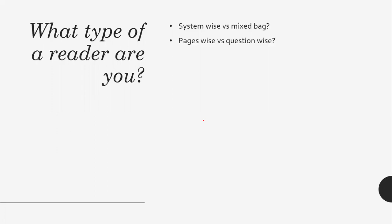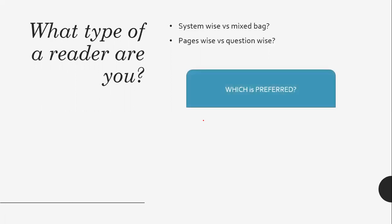I'm just giving a general direction here. Among page-wise and question-wise, I would suggest you try to formulate questions. Because if you are reading passively — whether pages or questions — that is not going to be retained long-term. Ask a question and try to answer it first, whichever way you are reading.